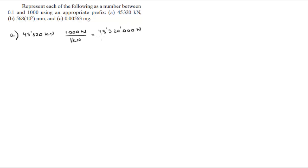You know that in one kilonewton there is one thousand newtons, which means that this is 45,320,000 newtons. Now they want you to be a number between 0.1 and 1000, so I will put the decimal point right here. And to do that, you're going to convert it to meganewtons.